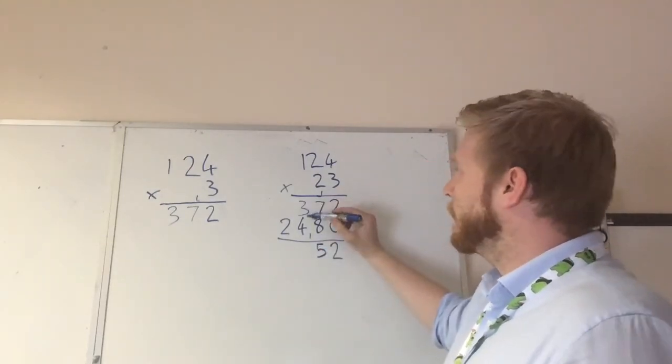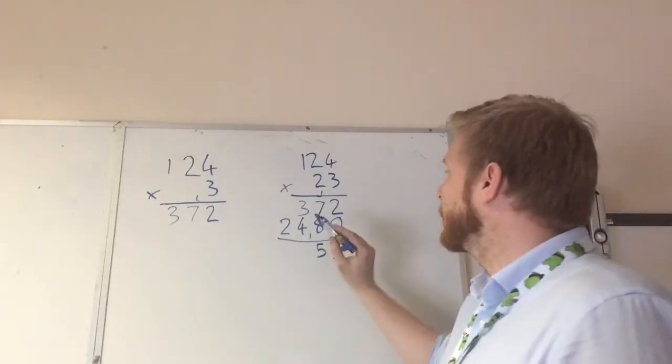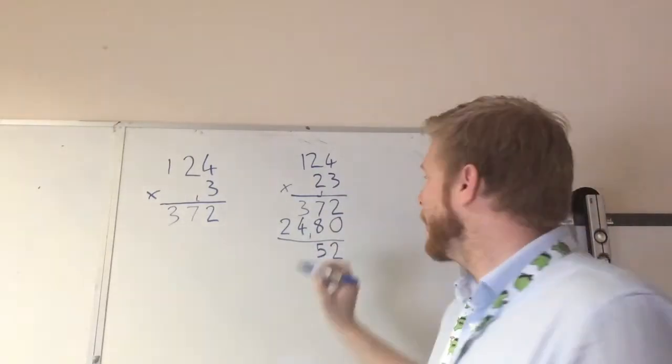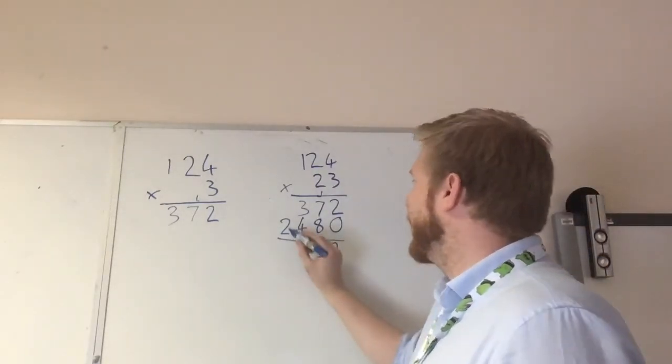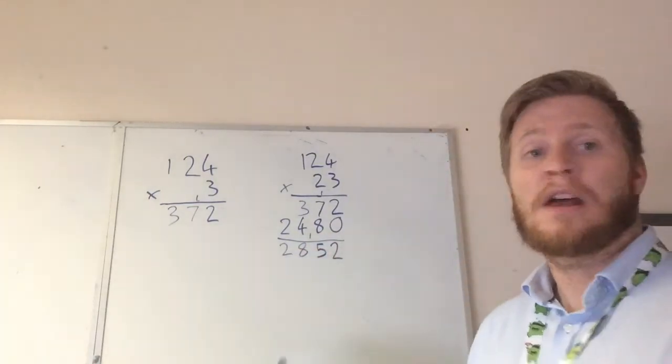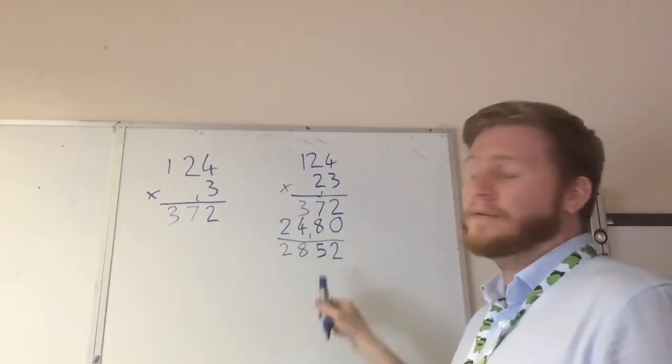And then we do 3 plus 4, which is 7, plus our 1 there, which is 8. And then 2 plus nothing, which is 2. And we get our answer of 2,852.